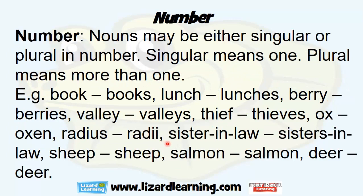Number. Nouns may be either singular or plural in number. Singular means one; plural means more than one. Examples: book/books, lunch/lunches, bury/berries, valley/valleys, thief/thieves, ox/oxen, radius/radii, sister-in-law/sisters-in-law. Some words stay the same: sheep/sheep, salmon/salmon, deer/deer.